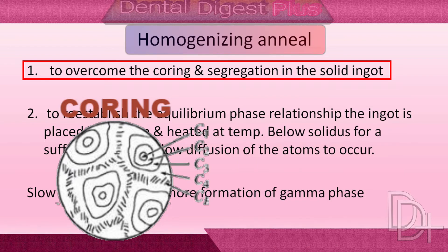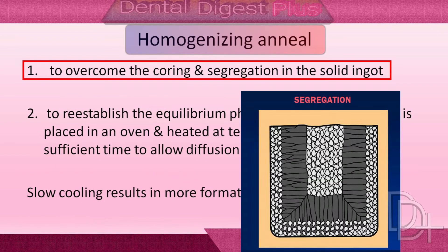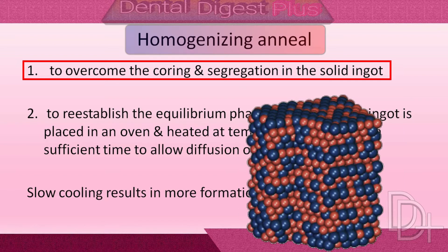Coring is a condition when a heated alloy cools in non-equilibrium conditions. Segregation means separation of things from the group — in this case, we don't want all the metals to get separated. We want them homogenized.